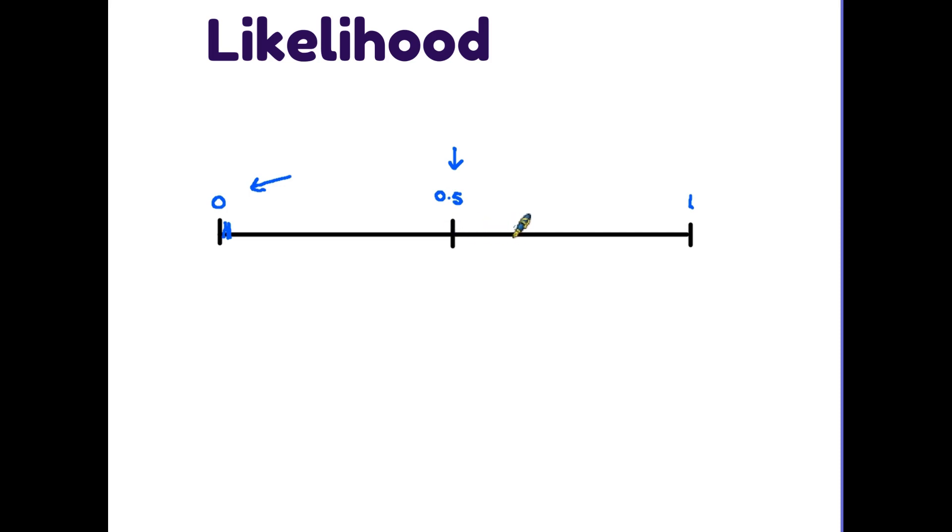Now if you were to be asked the question what is the chance of the sun coming up tomorrow morning then you may say well it definitely will. The likelihood therefore is 1. So here we have our range of numbers. Something that is totally impossible is 0. Something that is most definitely going to happen is 1. And everything else is somewhere in between.